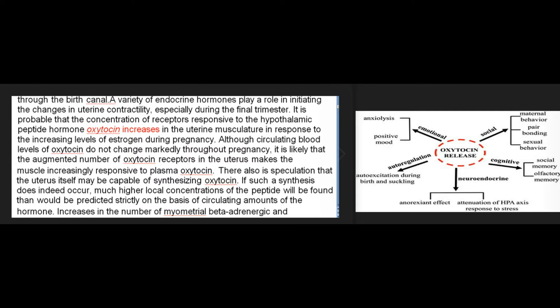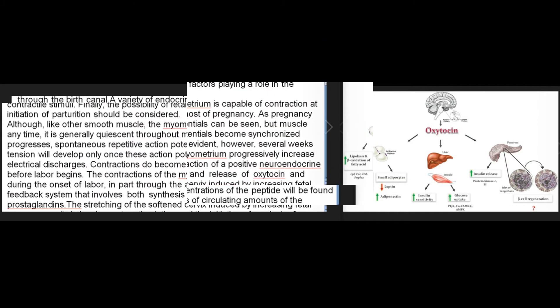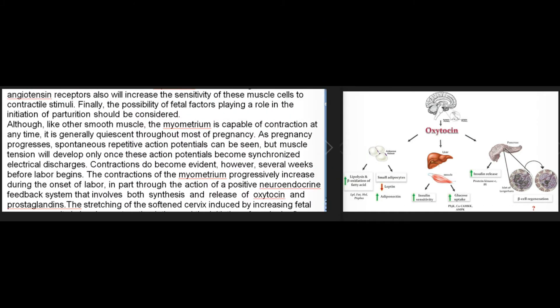Although circulating blood levels of oxytocin do not change markedly throughout pregnancy, the augmented number of oxytocin receptors in the uterus makes the muscle increasingly responsive to plasma oxytocin. There is also speculation that the uterus itself may be capable of synthesizing oxytocin; if such synthesis occurs, much higher local concentrations would be found than predicted strictly from circulating amounts. Increases in the number of myometrial beta-adrenergic and angiotensin receptors also will increase the sensitivity of these muscle cells to contractile stimuli.